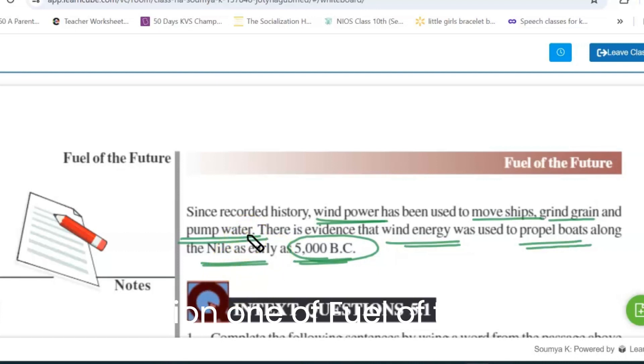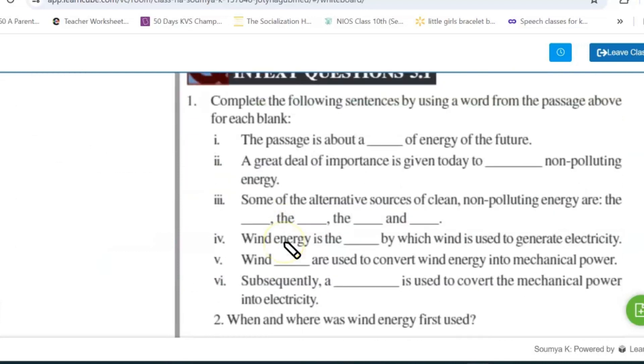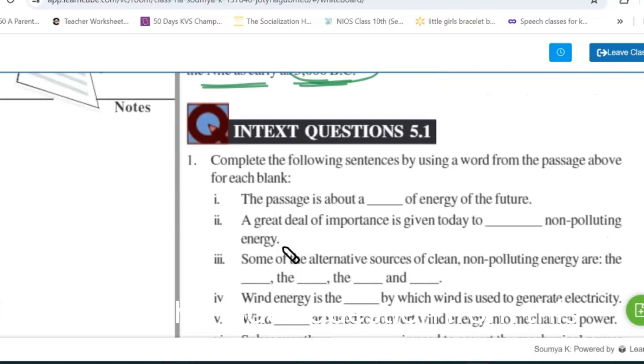So your section one of Fuel of the Future is done. Now we can check the in-text question from this portion. So first one is complete the following sentences by using a word from the passage above for each blank. The passage is about a blank of energy of the future.